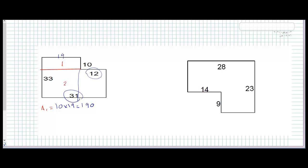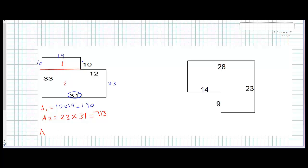For area 2, we need the height of shape 2. We know 10 plus the other part equals 33, so 33 minus 10 equals 23. The height is 23. Area 2 equals 31 times 23, which is 713 units squared. The total area equals area 1 plus area 2: 190 plus 713 equals 903 units squared.